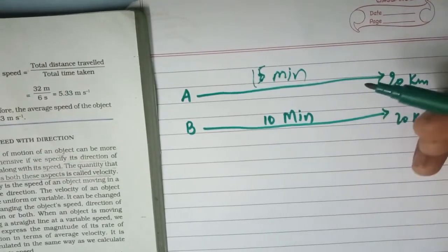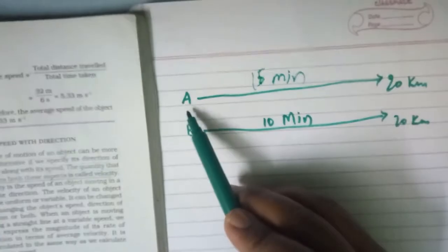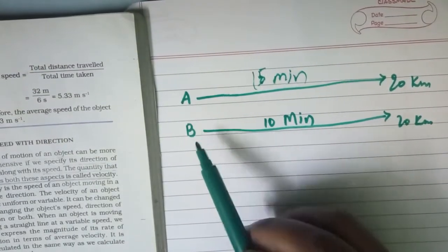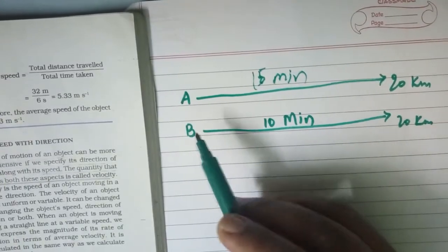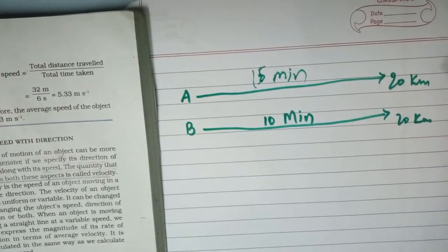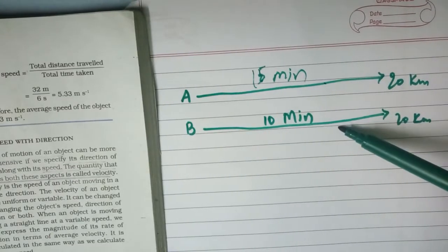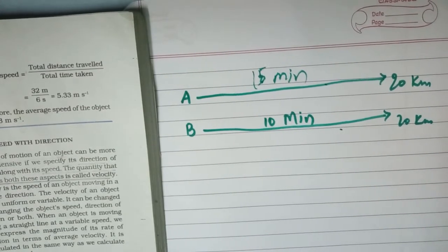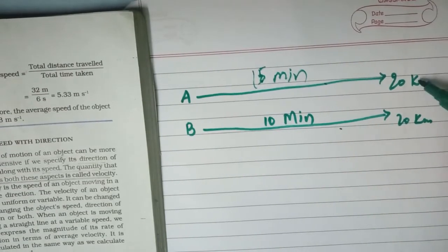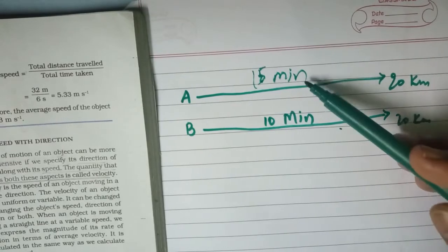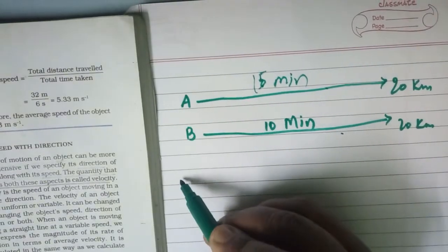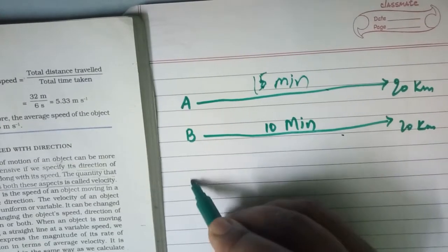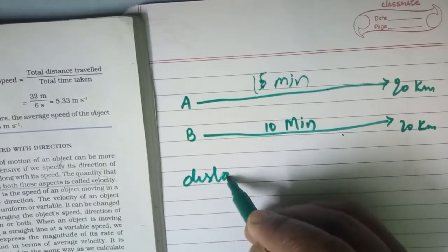Now if we have to know the motion — the change of place — of these two objects, we don't have one common criteria. We cannot simply say one is slow and the other is fast. So we need one standard factor to decide the change of place of these objects, which we call motion. So we take the distance traveled and the time taken to know the rate of motion.